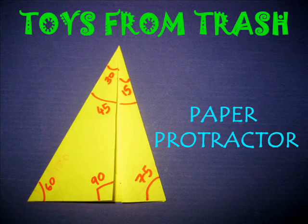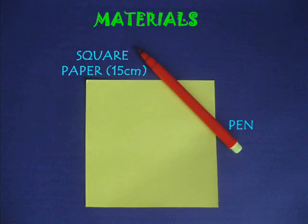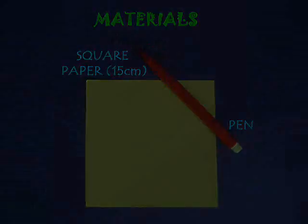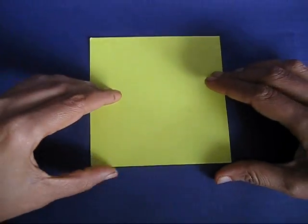With a square piece of paper, you can fold your own protractor. Take a square piece of paper and first fold the midline.